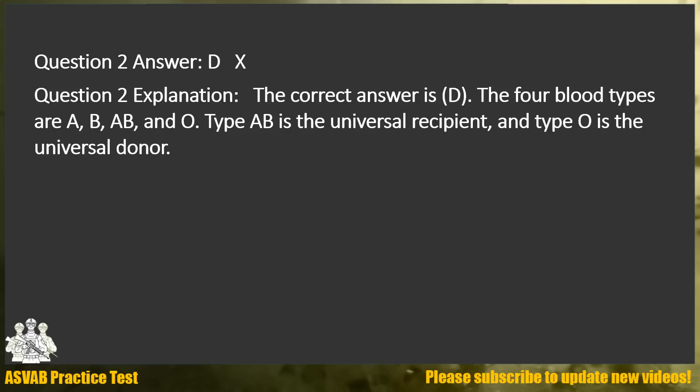Explanation: The correct answer is D. The four blood types are A, B, AB, and O. Type AB is the universal recipient, and type O is the universal donor.